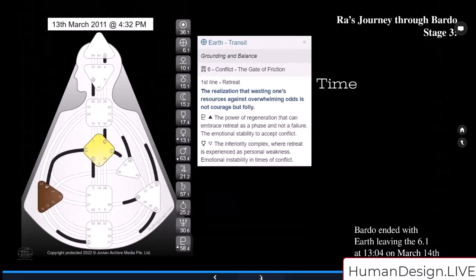And then his final stage three through the Bardo, the Earth transit went into first line of the next gate. And this is, first line is about Time. So this is now the Gate of Conflict, the Gate of Friction, intimacy, awareness. The realization that wasting one's resources against overwhelming odds is not courage but folly. Pluto exalted, the power of regeneration that can embrace retreat as a phase and not a failure. The emotional stability to accept conflict. Mercury detriment, the inferiority complex where retreat is experienced as personal weakness. Emotional instability in times of conflict. So his Bardo ended with Earth leaving the 6.1 at 13 hour 13 and 4 minutes on March 14th, 2011.